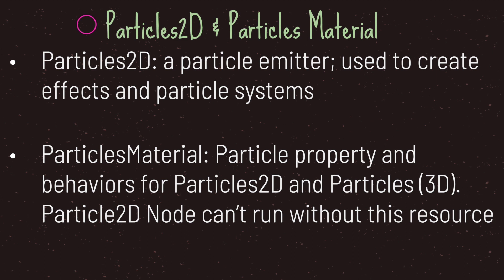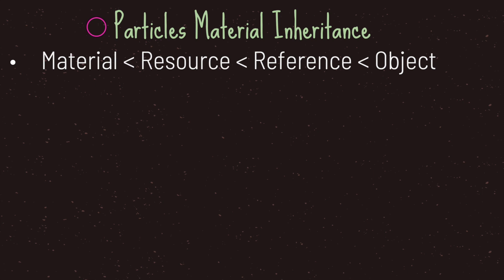Godot gives you two different classes. The first is Particles2D, a node class that will emit your particles. You use the Particles2D node class to create effects in your particle system. The second class is the ParticlesMaterial resource class, which contains the particle properties and behaviors that the Particles2D node class will use. Basically, a Particles2D node can't run without the ParticlesMaterial resource class, since your particle system will be based on its properties.